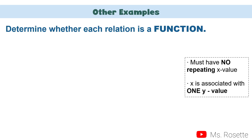Let us have more examples. Remember that to identify a relation as a function, it must not have a repeating x value, and x must be associated with only one y value.